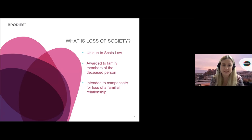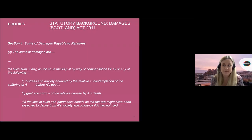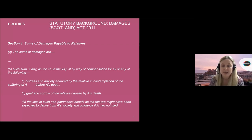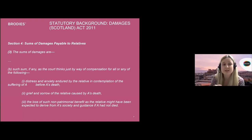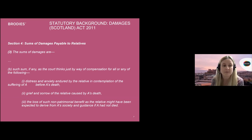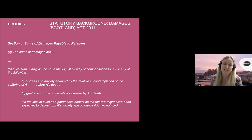The statutory scheme for awarding damages for fatal accident claims in Scotland is set out in the Damages (Scotland) Act 2011, and the relevant section — section 4(3)(b) of the Act — sets out the three strands. The two other strands are distress in contemplation of the family member's suffering before their death, and the grief and sorrow caused by the death. So those are your three strands to loss of society as we call it.